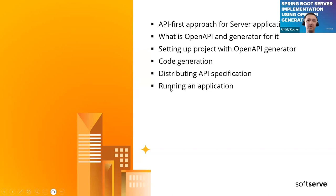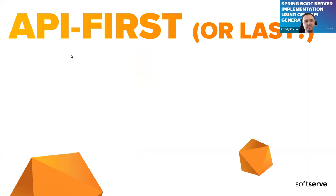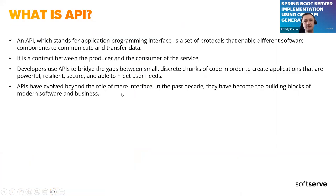If you have any questions, feel free to ask. So, API first or last? First of all, let's recall what an API is. In short, an API is just a contract between something which provides some services and the consumer of those services. It's supposed to be a kind of document which you can use not just to make a call to these services, but also to implement those services — a contract between two parties.